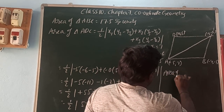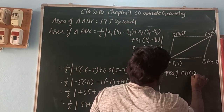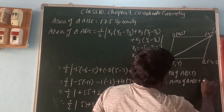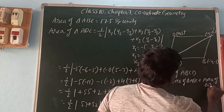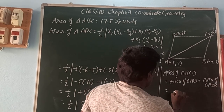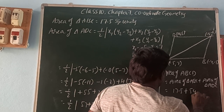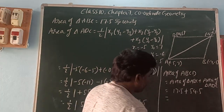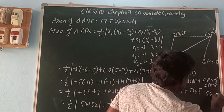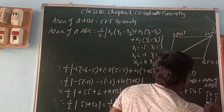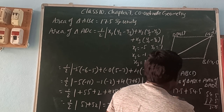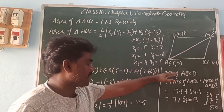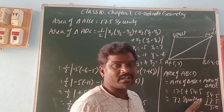Therefore, area of quadrilateral ABCD = area of triangle ABC + area of triangle ADC = 17.5 + 54.5 = 72 square units.